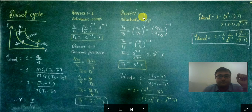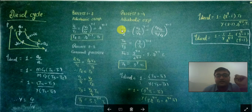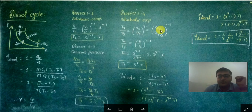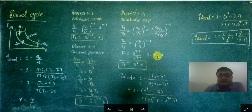For the adiabatic expansion process 3-to-4, we use: T4/T3 = (v3/v4)^(γ−1). Dividing numerator and denominator by v2, v3/v2 is the cutoff ratio ρ and v1/v2 is the compression ratio r, so T4/T3 = (ρ/r)^(γ−1). Therefore T4 = [ρ^(γ−1) / r^(γ−1)] · T3. Substituting T3 = ρ · r^(γ−1) · T1, the r^(γ−1) terms cancel, giving T4 = ρ^γ · T1.